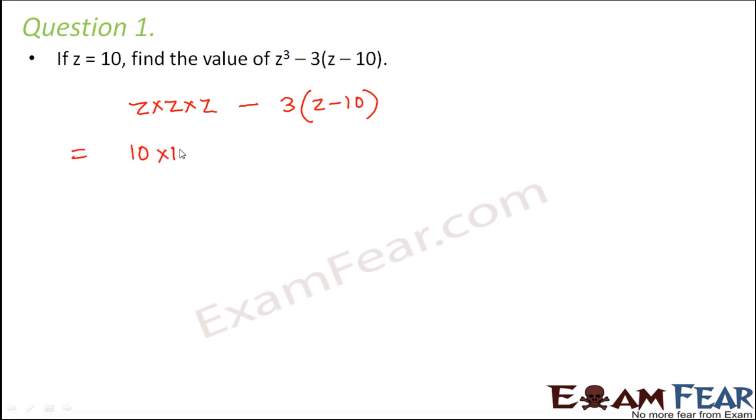So this would be 10 into 10 into 10 minus 3 into 10 minus 10. So what would be 10 minus 10? 0 and 0 into 3 would be 0. And what would be 10 into 10 into 10? That would be 1000. So 1000 would be the answer.